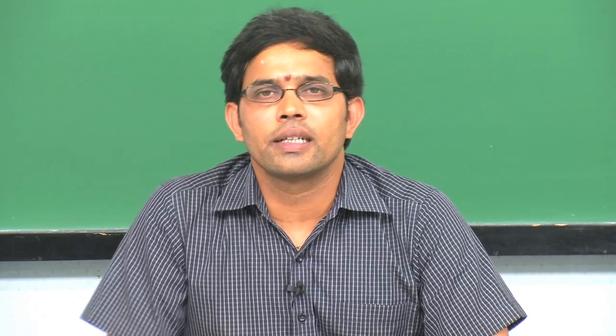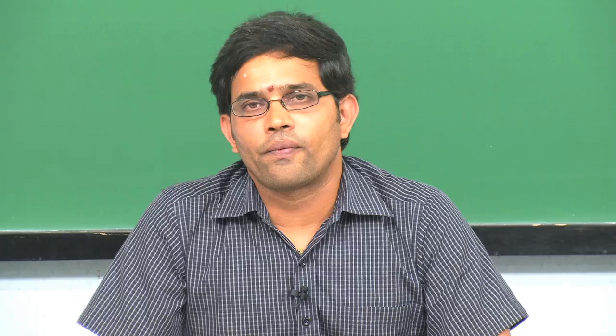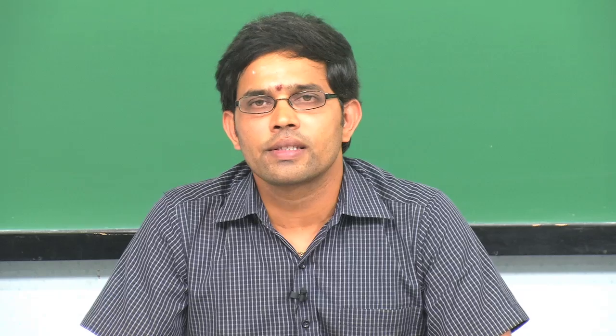In other words, the architecture layer is the interface between software and hardware. Once the ISA is defined, our next task is to have functional units that execute the instructions specified by the ISA, and that comes in the microarchitecture layer. Microarchitecture — also called organization — deals with the functional units and the interconnections among those functional units to realize the ISA specified at the architectural layer.